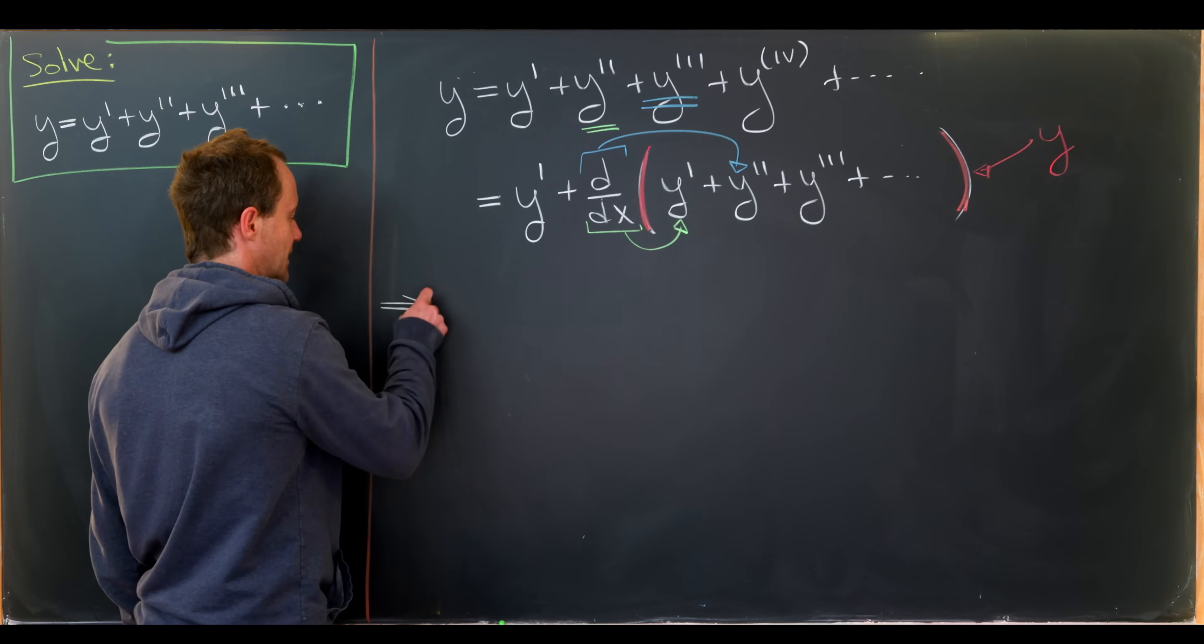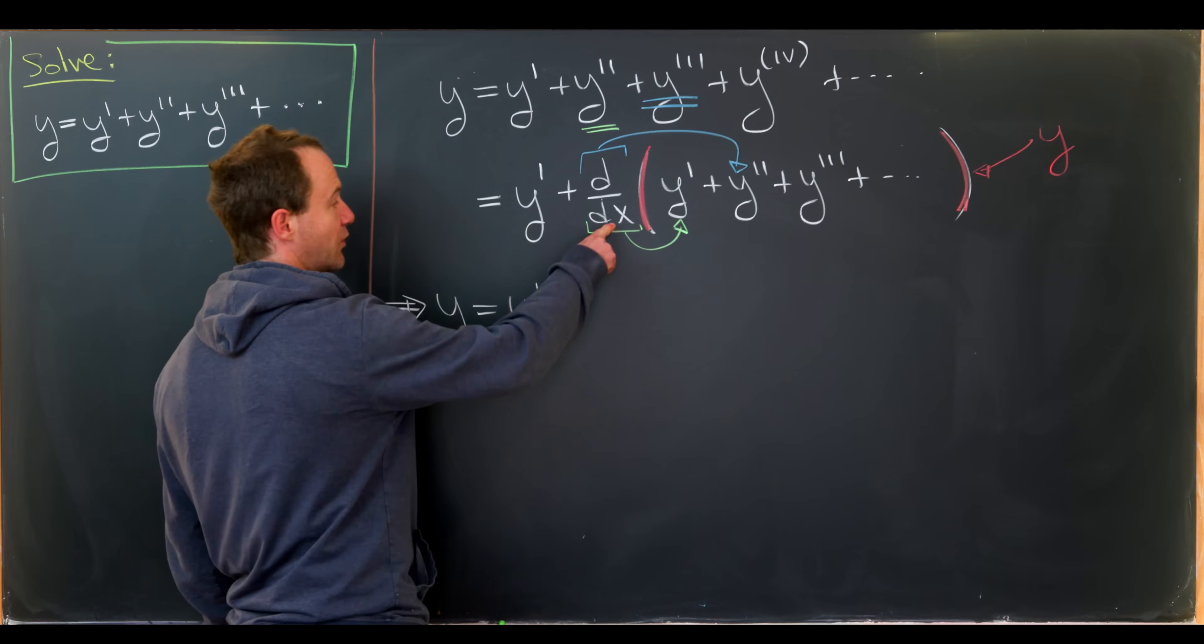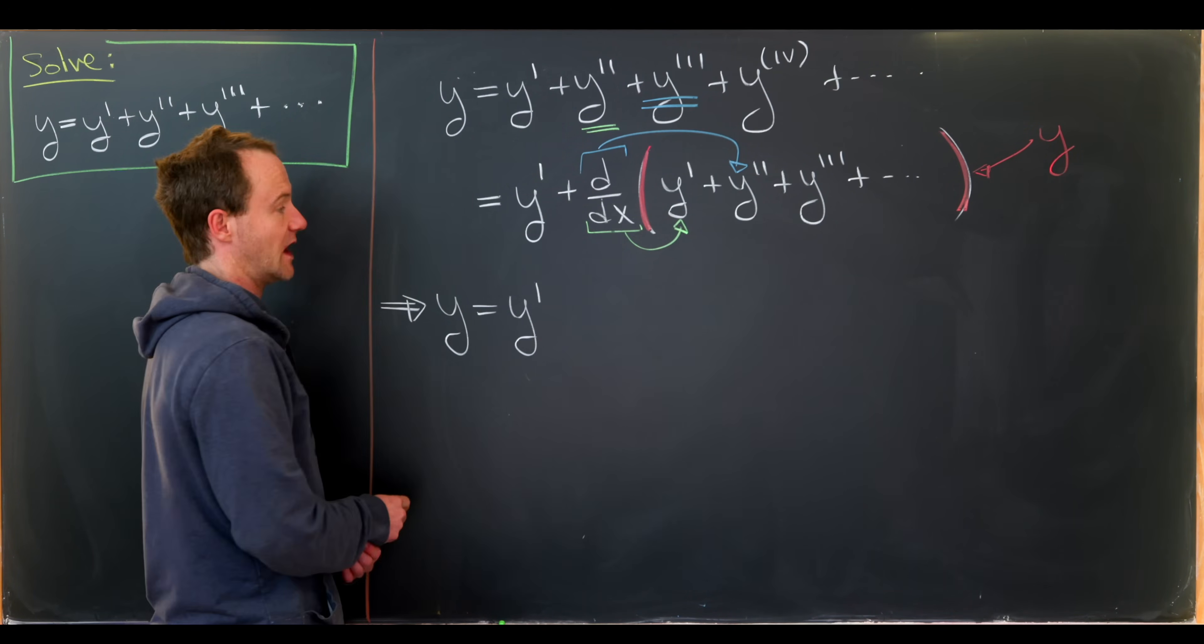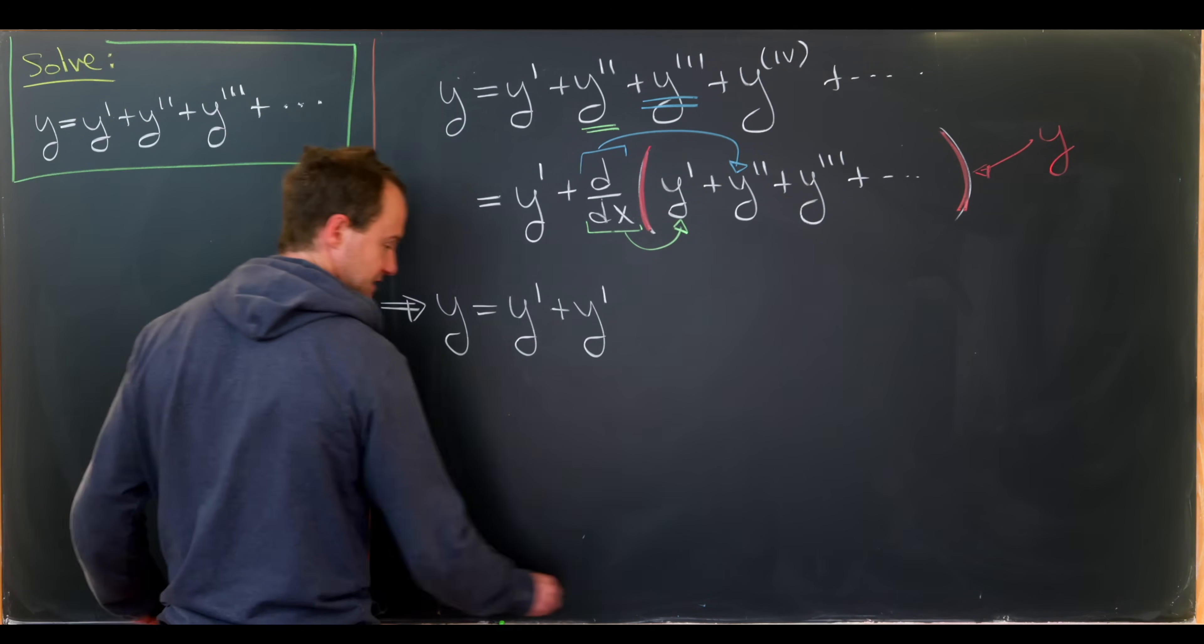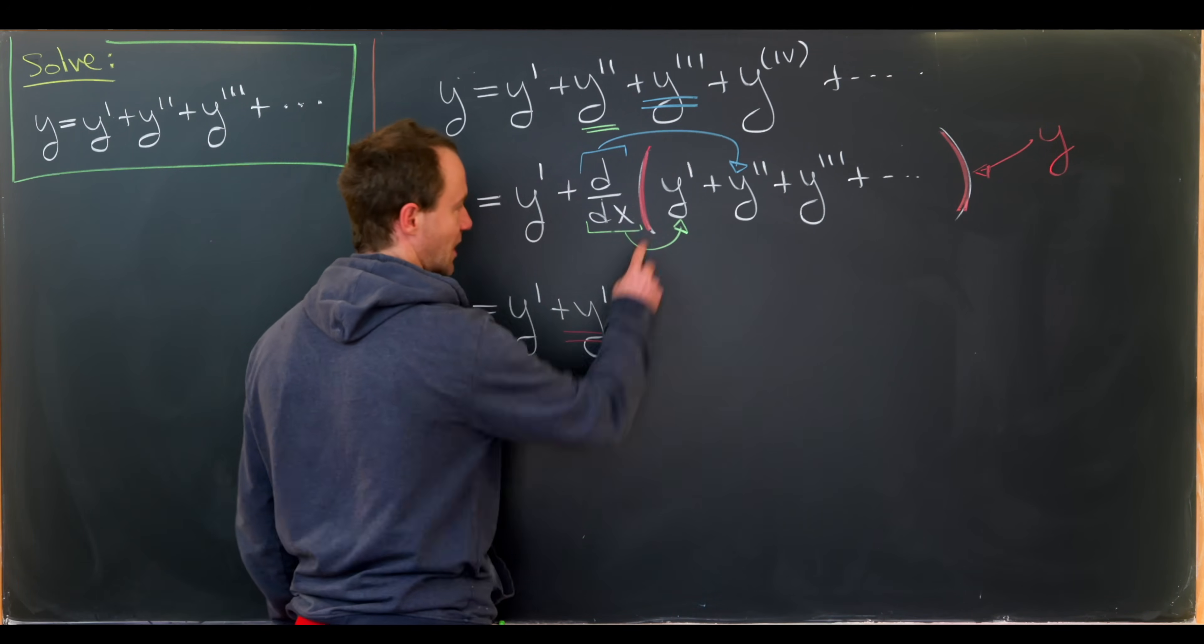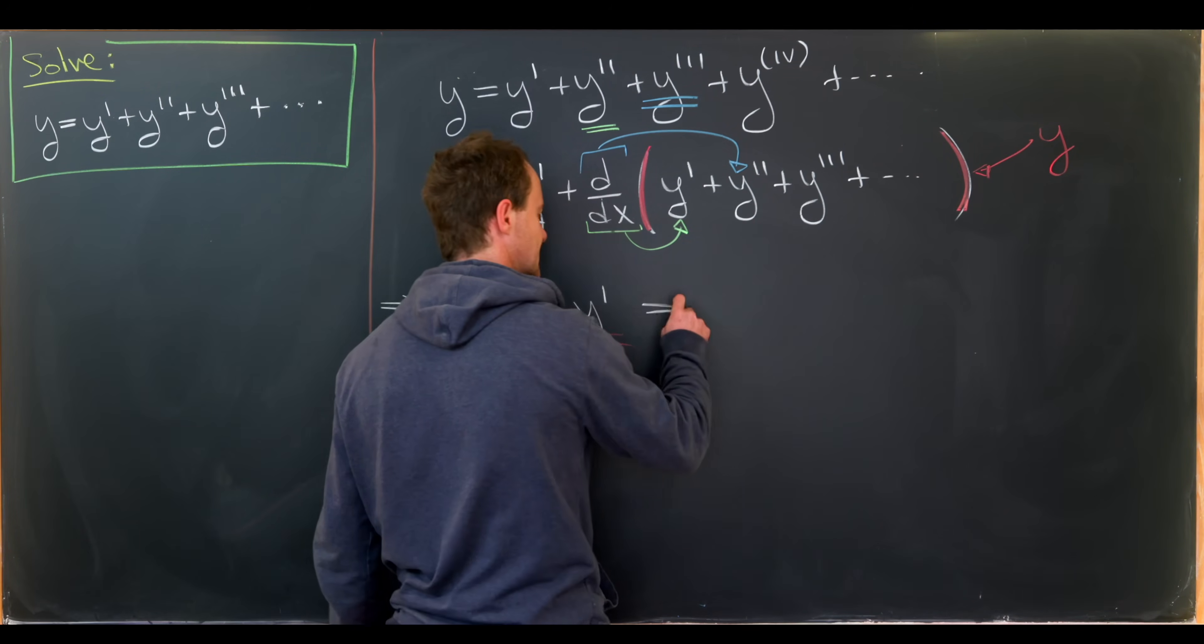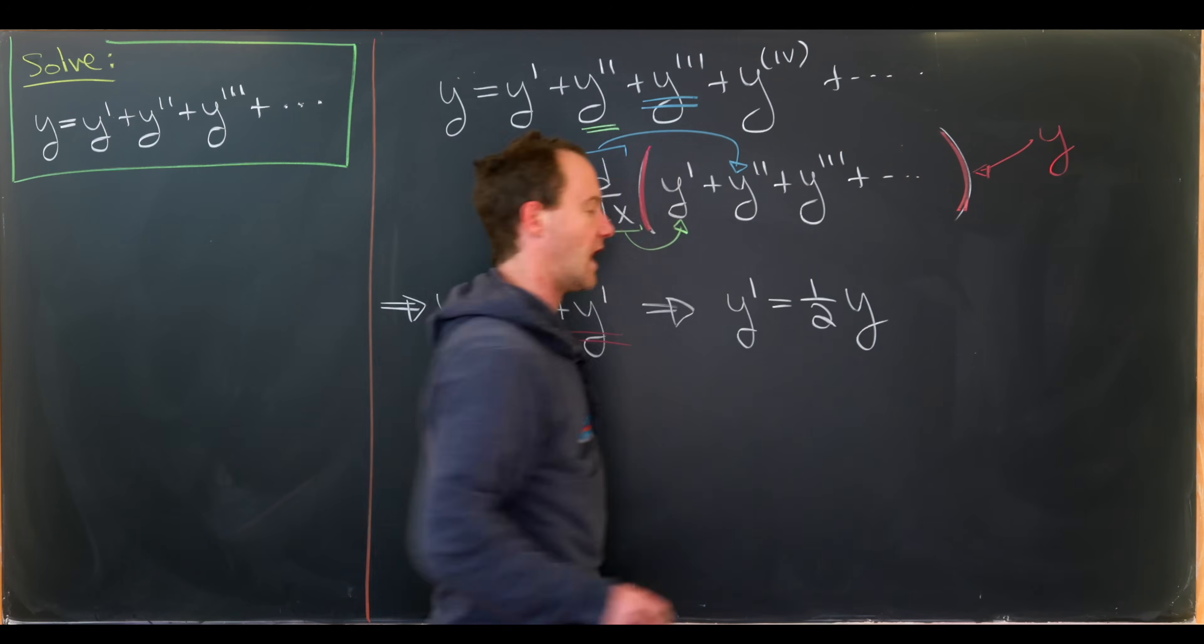So recopying this we have y equals y prime plus the derivative of y which itself is y prime, so plus y prime. This first y prime is just brought down whereas this second y prime is done by that substitution. But let's notice that tells us that we have y prime equals one-half y.